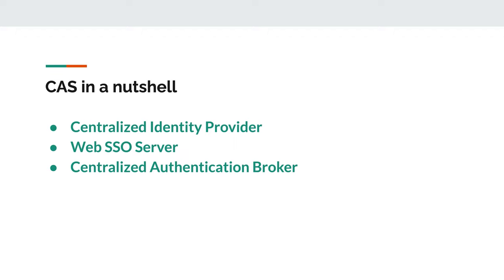Modern CAS versions provide a comprehensive platform for centralized authentication and authorization needs. While CAS Server contains many useful support modules, some of its main purposes are to act as a centralized identity provider supporting multiple protocols such as SAML2, OAuth, OpenID Connect, REST, as well as its own native and mature CAS protocol.